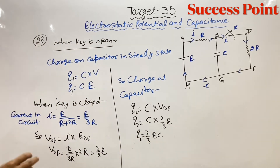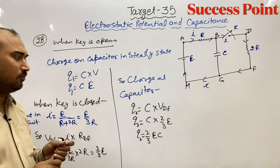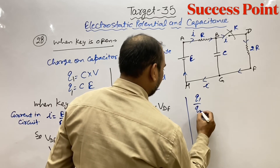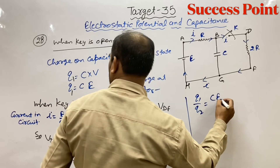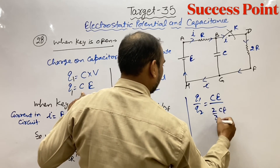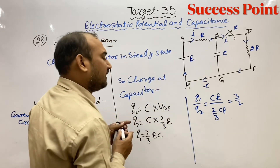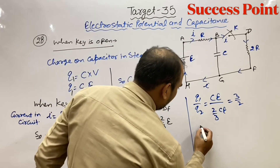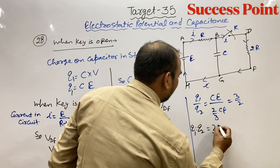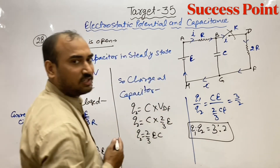They asked for the ratio of q1 and q2. q1 = CE and q2 = 2CE/3. So q1/q2 = CE / (2CE/3) = 3/2. The ratio q1 : q2 = 3 : 2, so the answer is option (a) 3/2.